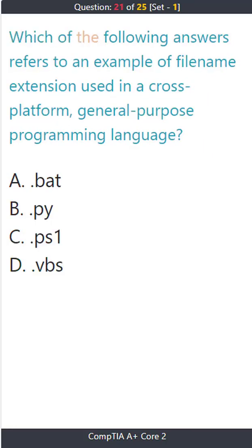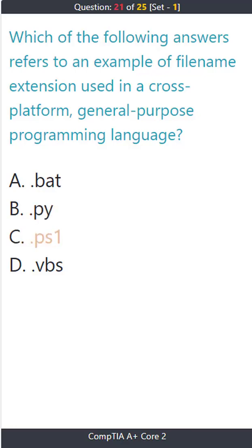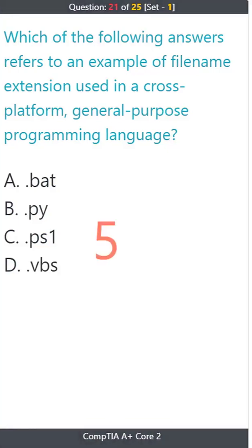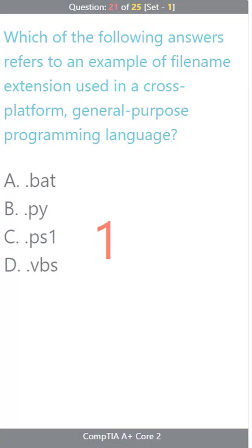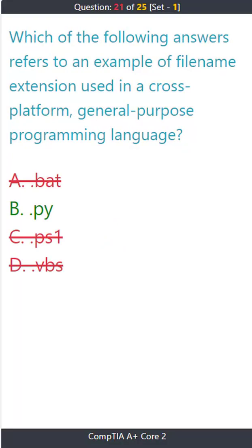Question 21: Which of the following answers refers to an example of a file name extension used in a cross-platform general purpose programming language? A) .bat. B) .py. C) .ps1. D) .vbs. The correct answer is B: .py.